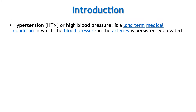Hypertension or high blood pressure is a long-term medical condition in which the blood pressure in the arteries is persistently elevated. The word 'persistent' is important because if a person has an occasional increase in blood pressure, it is not hypertension. But if blood pressure is repeatedly more than normal, then it is diagnosed as hypertension. It is not a disease itself, but rather an important risk factor for developing various cardiovascular conditions like myocardial infarction, stroke, etc.